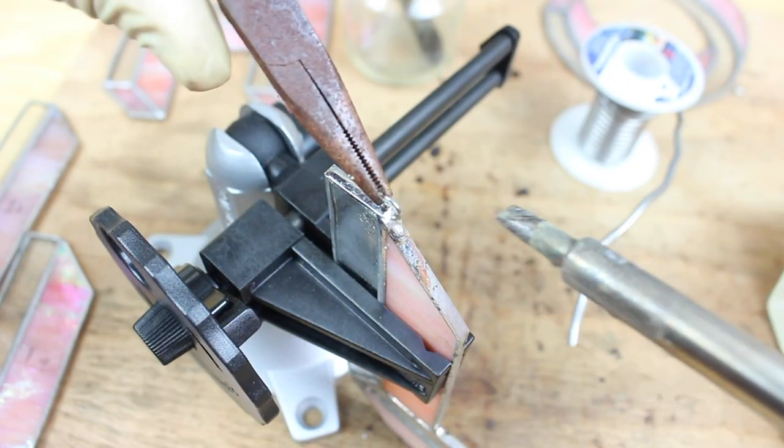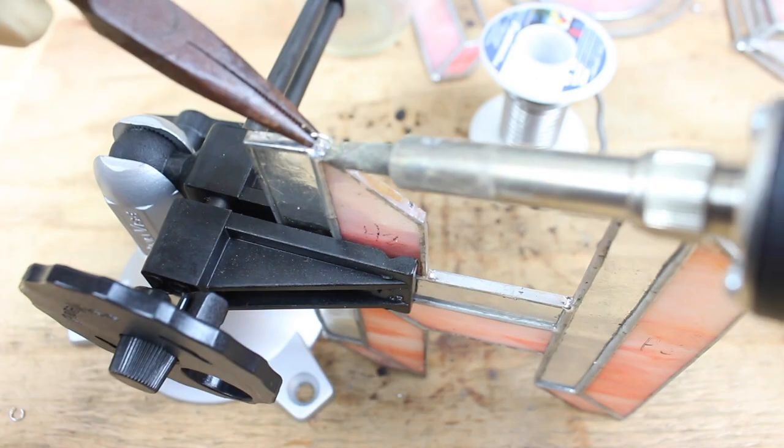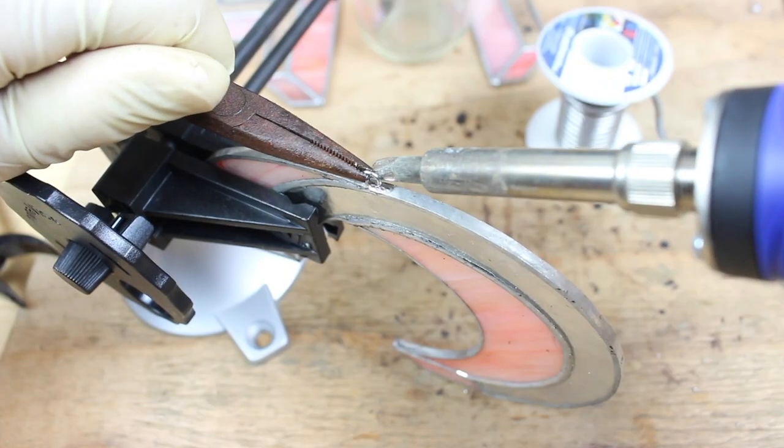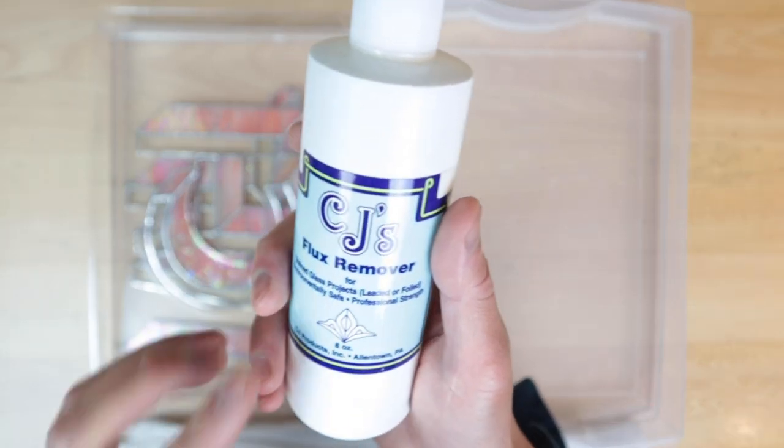And of course we got to put on the jump rings so we can hang them. And we're going with CJ's flux remover to clean everything.